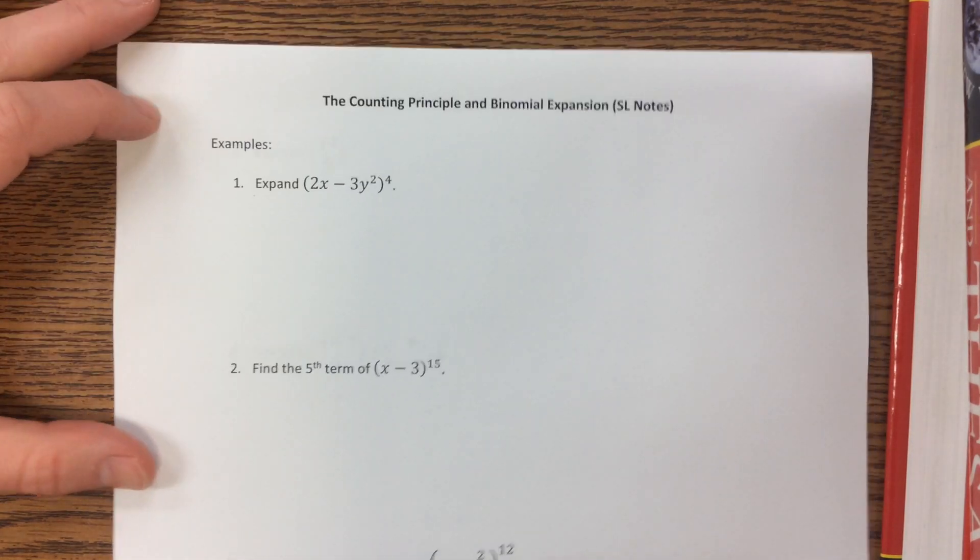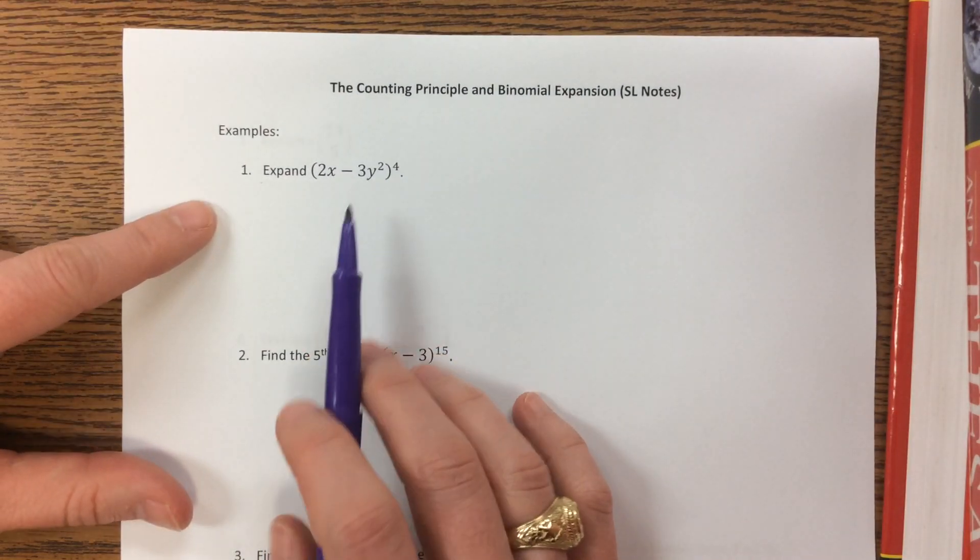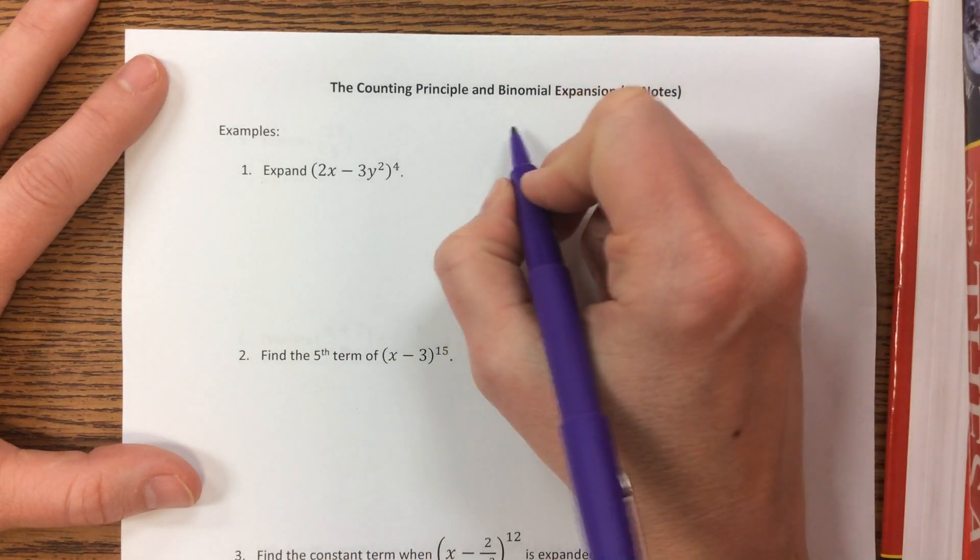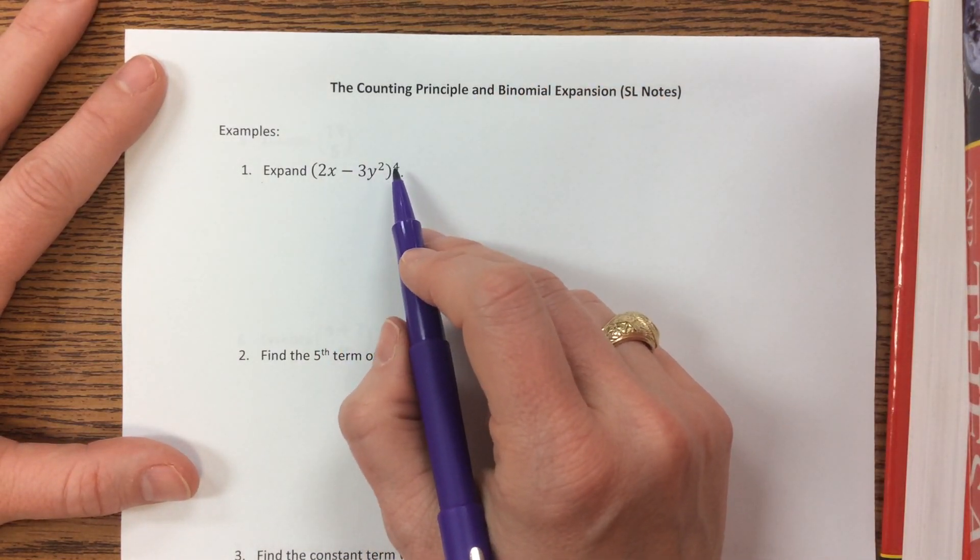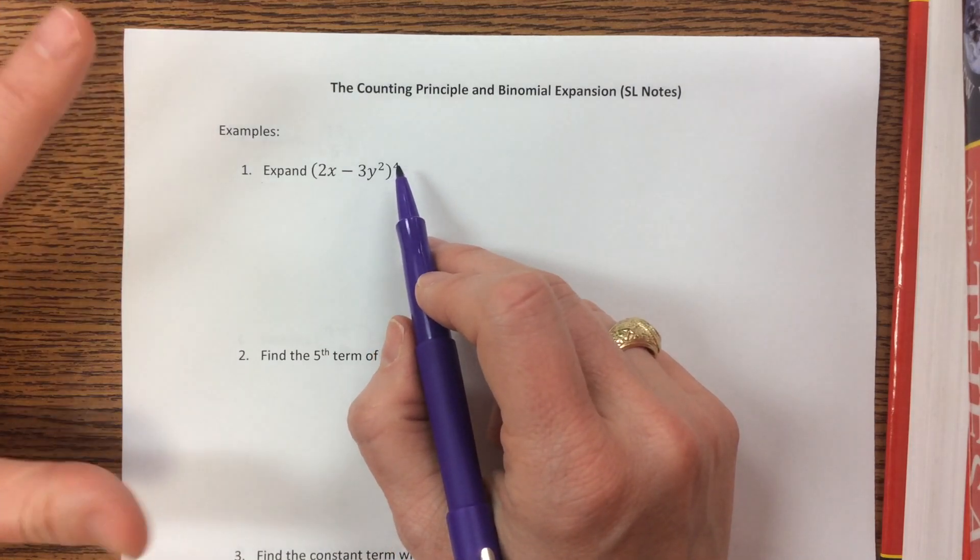We're continuing through the counting principle and binomial expansion. On this worksheet here, they ask us to expand this. So since it's 4, if this were a really big number, then I probably wouldn't ask you to find all of the terms. But this raised to the 4th power means it's going to have 5 terms.